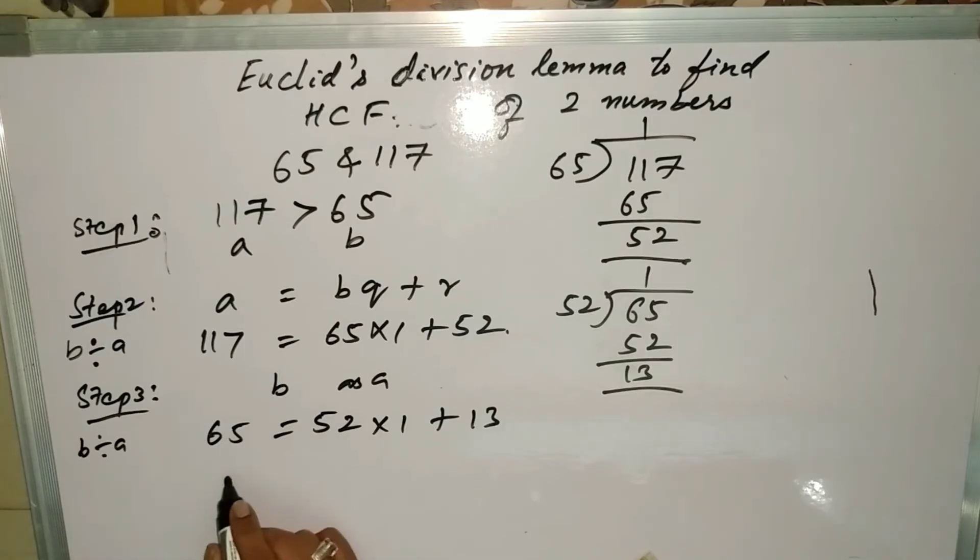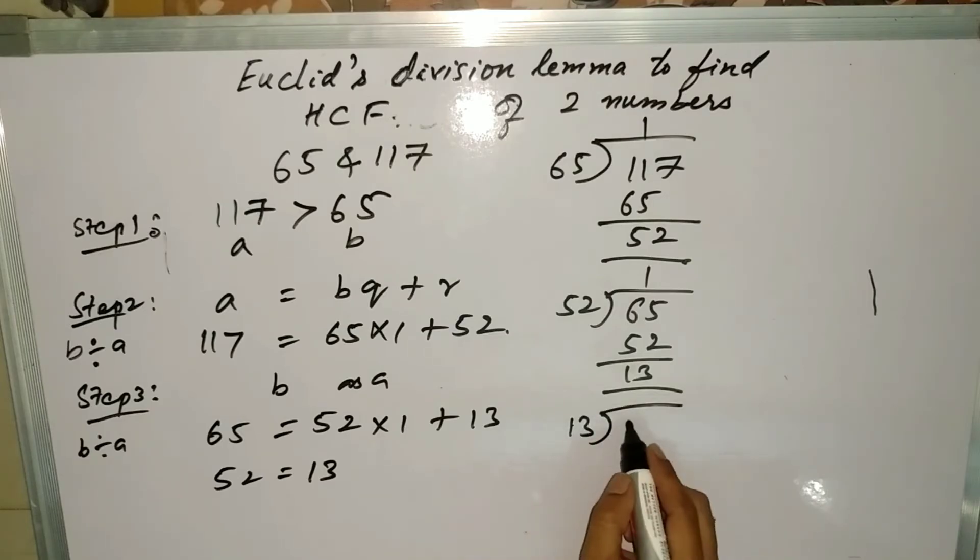Again repeat the steps. We will take b divided by a, this will become 52 here and this will become b as 13. Now again we will divide 13 into 52.